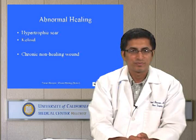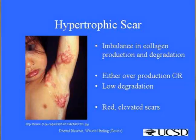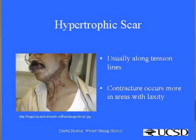When talking about abnormal wound healing in a cutaneous wound, hypertrophic scar and keloids come to mind first. A hypertrophic scar is created due to imbalance in collagen production and degradation — either overproduction, low degradation, or a combination. It presents as red, elevated scars which are itchy and painful and affect function. They usually appear along lines of tension. As shown in this photo, the scar has become hypertrophic across the neck, where the skin is very lax, and fibroblasts within the scar have caused significant wound contraction, restricting neck extension.